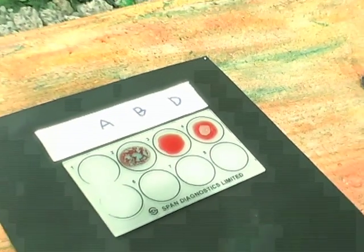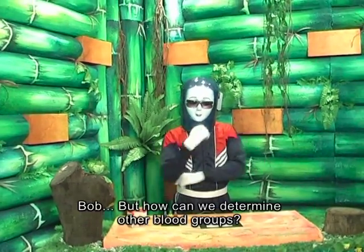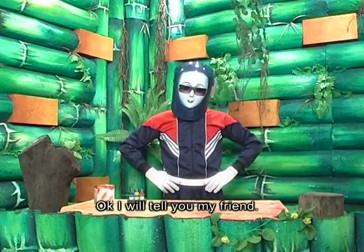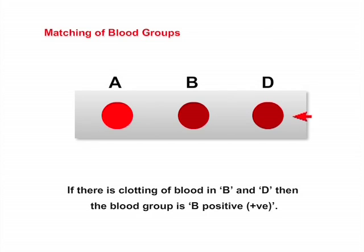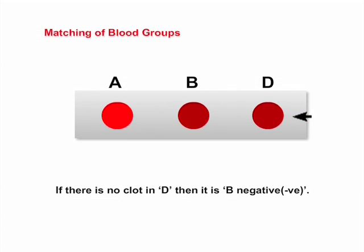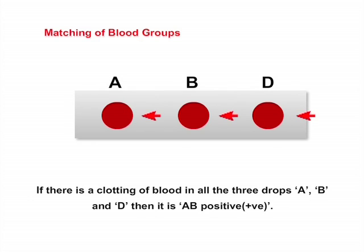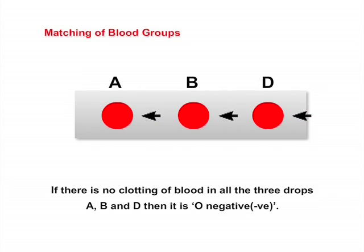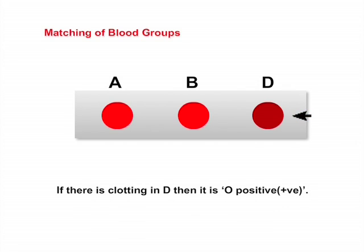If there is clotting of blood in B and D then the blood group is B positive. If there is no clot in D then it is B negative. If there is clotting of blood in all three drops A, B and D then it is AB positive. If there is no clotting in D then it is AB negative. If there is no clotting in all three drops A, B and D then it is O negative. If there is clotting in D then it is O positive.